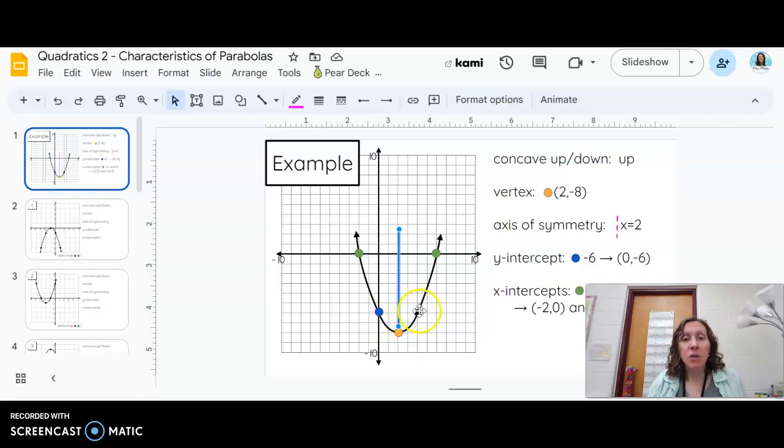These two points right here, they're each two away from the mirror. And these green points here, they're each four away from the mirror on both sides. So it's the line of symmetry.